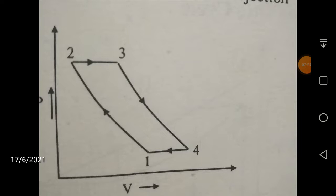This is your Joule cycle or Brayton cycle. In the Joule or Brayton cycle, 1 to 2 is the reversible adiabatic compression (PV^γ = constant), 2 to 3 is the constant pressure heat addition, 3 to 4 is the reversible adiabatic expansion, and 4 to 1 is the constant pressure heat rejection.